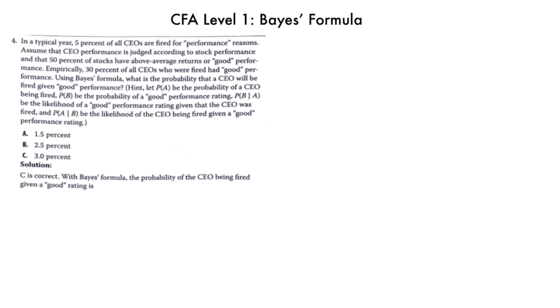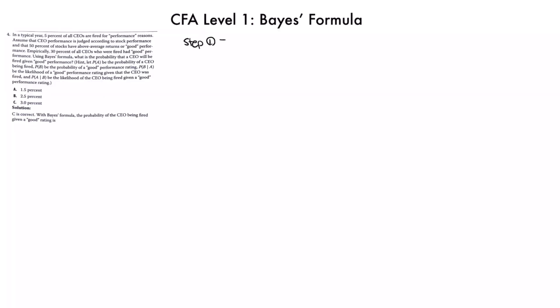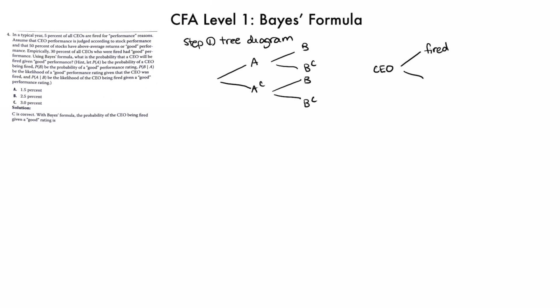Next, CFA Level 1 book Number 4. In a typical year, 5% of all CEOs are fired for performance reasons. CEO performance is judged by stock performance, and 50% of stocks have above-average or good performance. Empirically, 30% of all CEOs who were fired had good performance. Using Bayes' formula, what is the probability a CEO will be fired given good performance? Step 1: tree diagram — A and AC branch into B and BC. The hint for identifying A and B is the phrase '30% of all CEOs who were fired had good performance' — fired happens first (A), good performance is second (B).